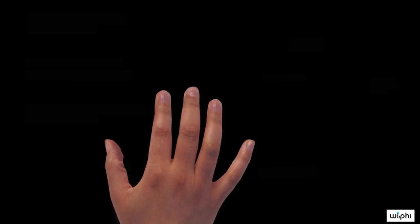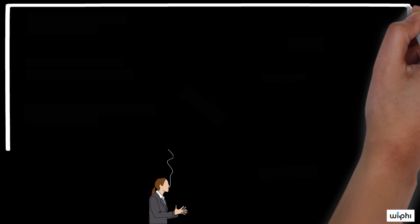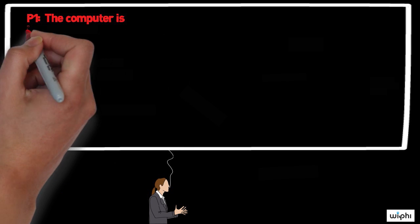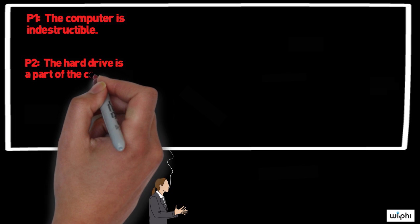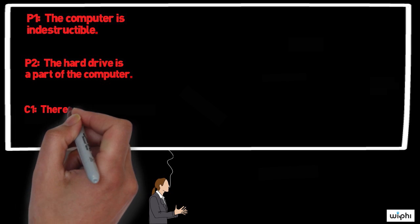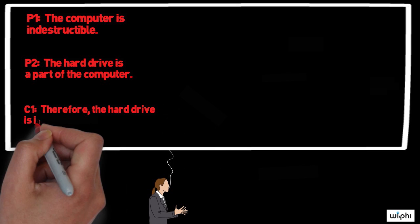So let's try another, more familiar example. Suppose that your friend made this argument: The computer is indestructible. The hard drive is a part of the computer. Therefore, the hard drive is indestructible.